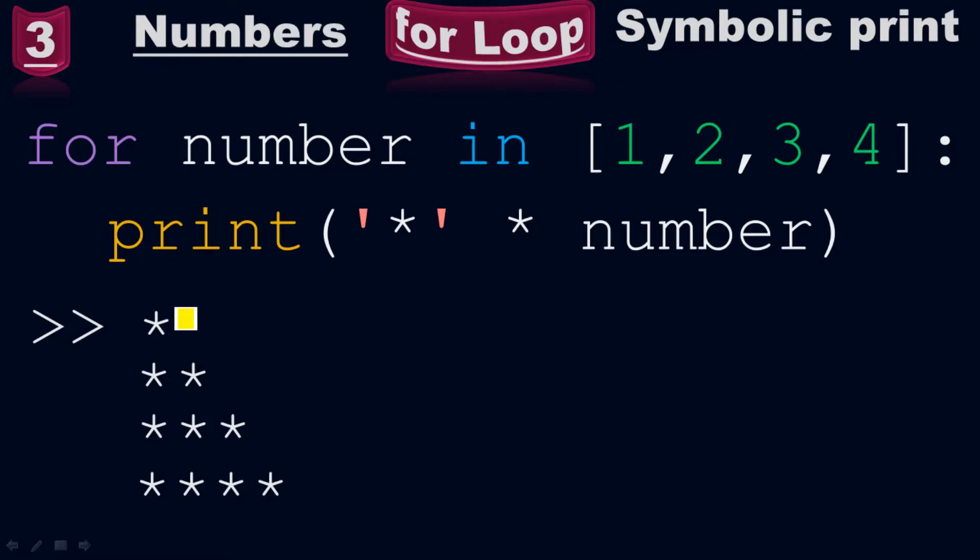This is called symbolic print. Whatever symbol you put inside double quotes, if you put X you will see all the way X, if you put K you will see all the way K. Since I put asterisks, therefore there are all the way asterisks in this pattern.